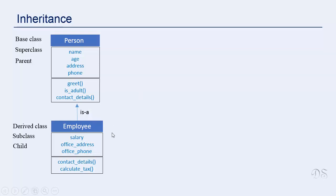Now this is just a simple example. The real world classes would be more complex and will have a lot more code. By using inheritance, you can use the features of a class that has already been tested and is running, and this definitely reduces effort and thus saves time. You can easily create new classes by using the tried and tested functionality of an existing class.